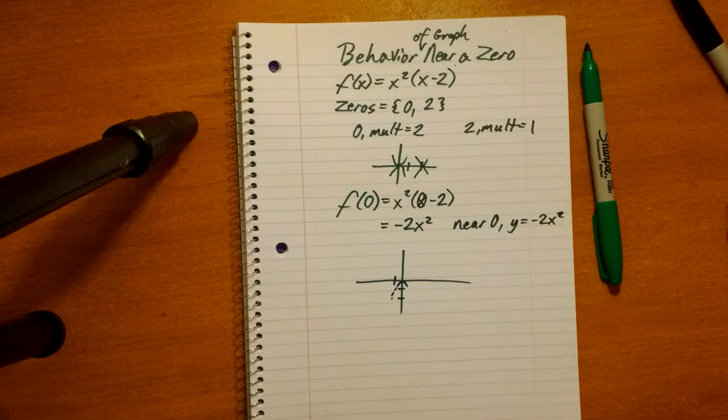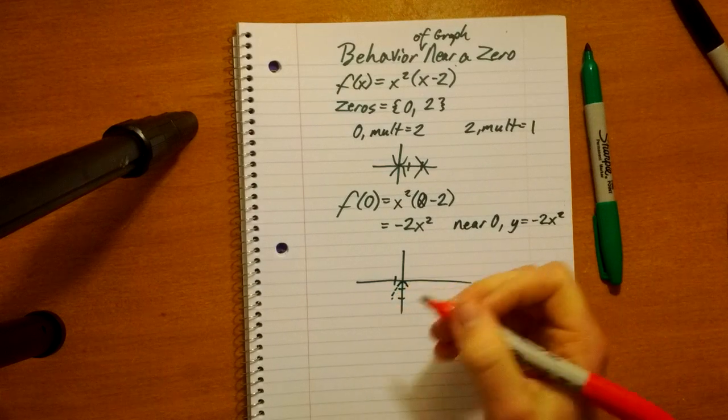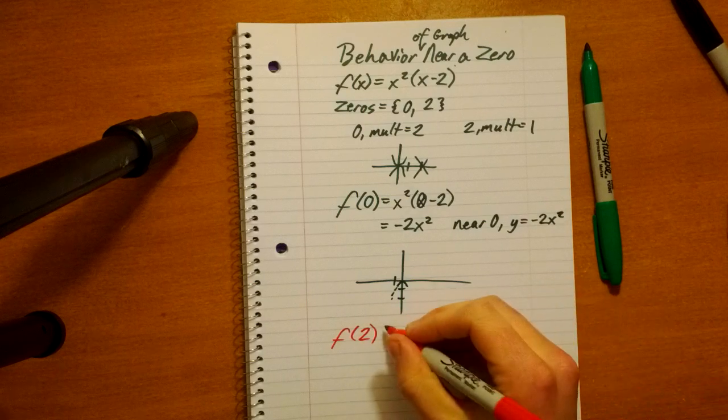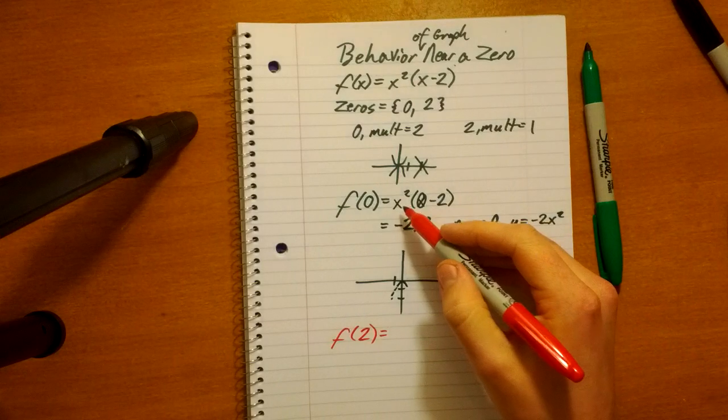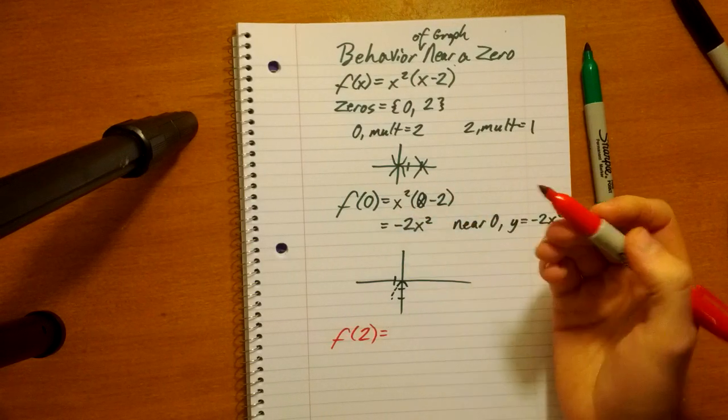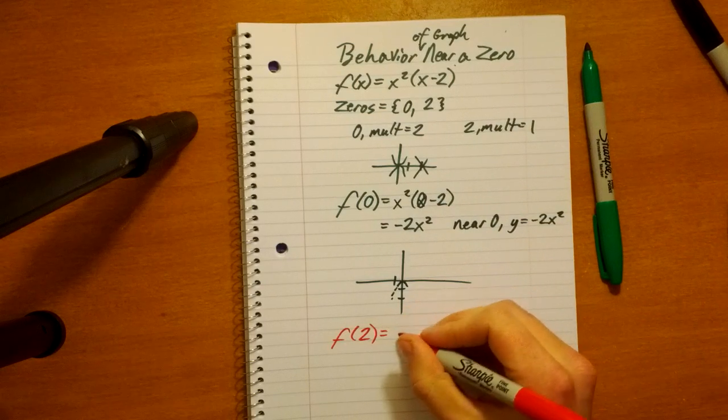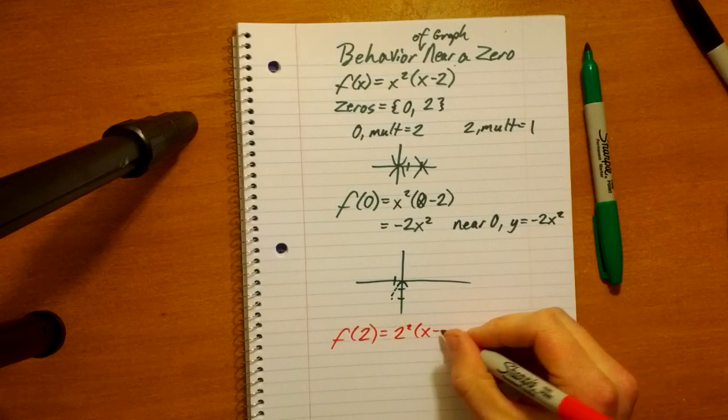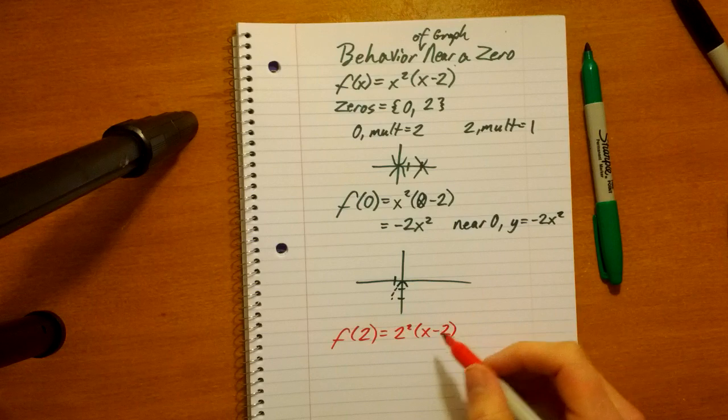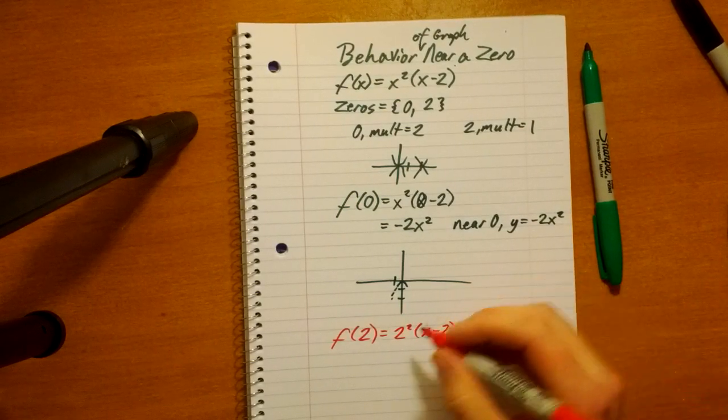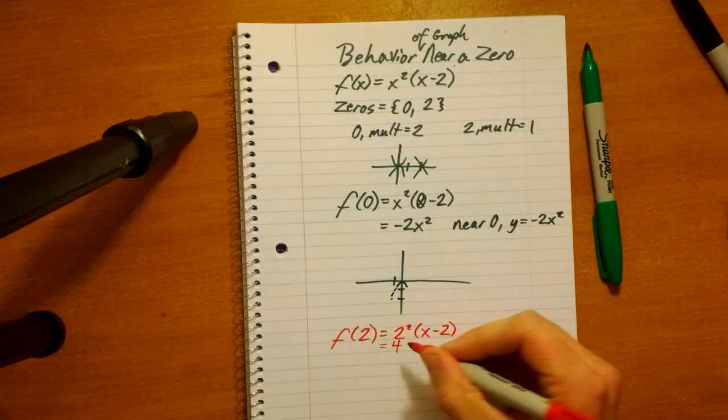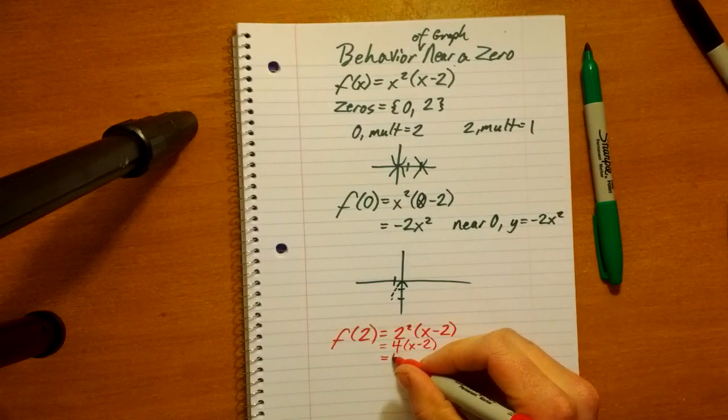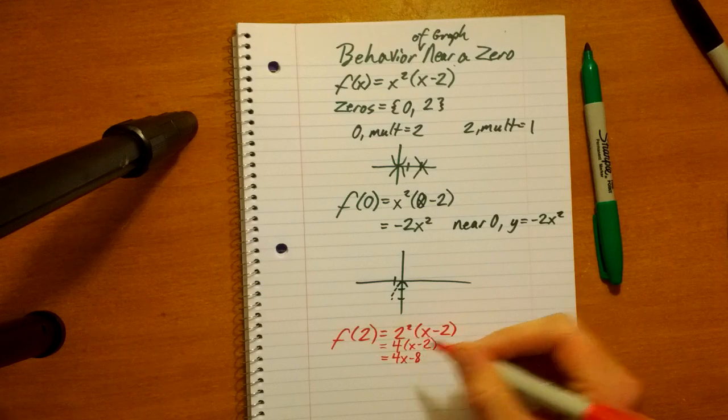All right, we're going to go with the Christmas colors again, and find the behavior of the graph near the other zero, which is two. That is bright and vivid, kind of like a double rainbow. So, take the same principle, we plug it in to the x that it is not the zero of. So, we have 2 squared times x, we leave that as x minus 2. The x that it is the zero of, we leave as x. So, now, we have 4 times x minus 2. And that can be further simplified to 4x minus 8. What do you know? That looks like a linear function.